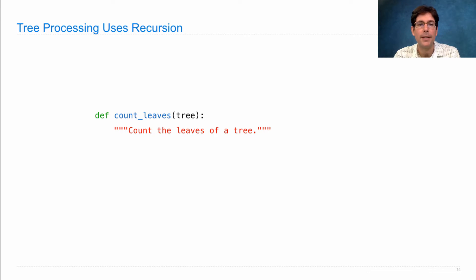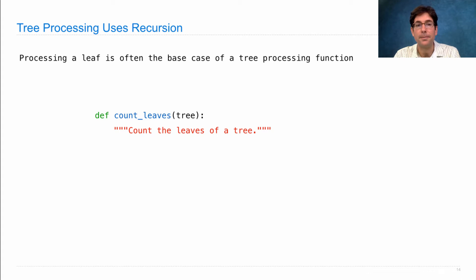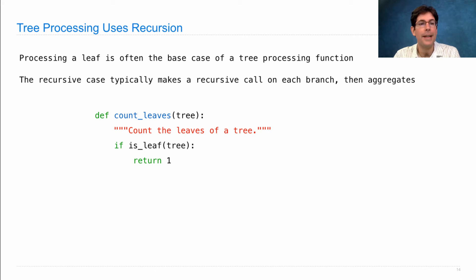Here's an example: let's say we want to count how many leaves are in a tree. We count the leaves by processing a leaf, and that's often the base case of a tree processing function. If you have a leaf, then this tree has one leaf. If it's not a leaf, that means it has branches, and the way to count the leaves of a tree is to count the leaves of each of its branches and then sum those up.